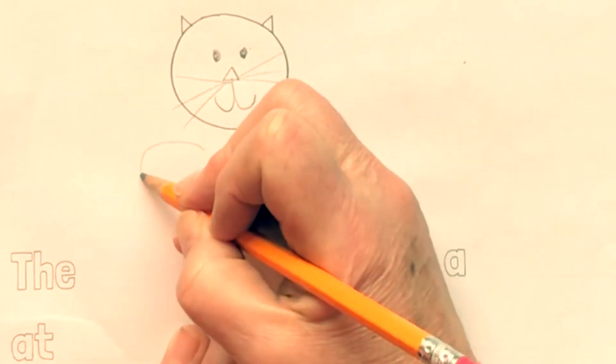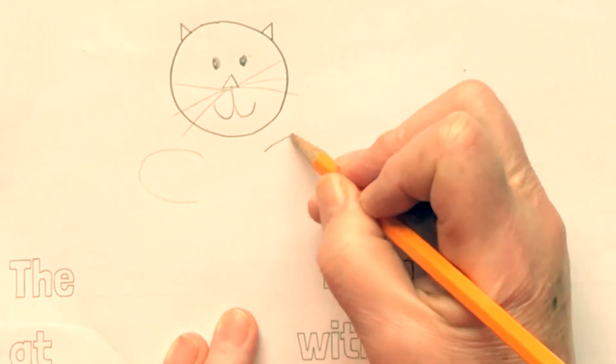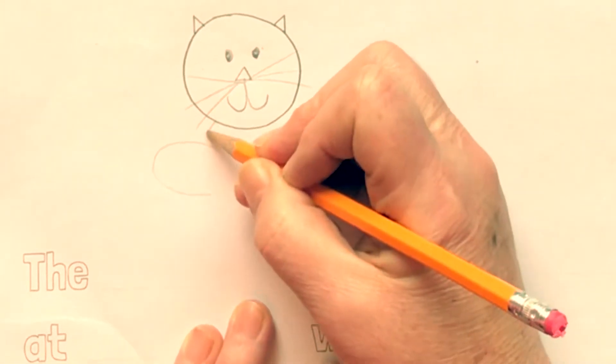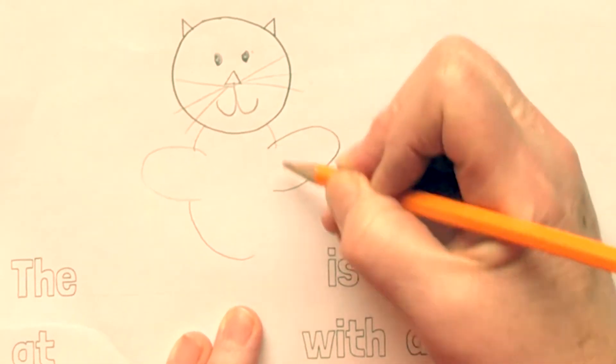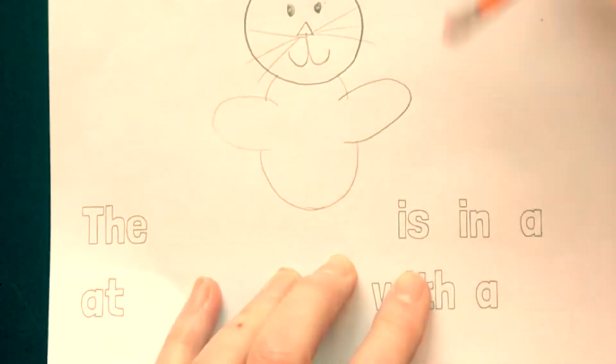And now for this cat, it's going to hold a bat, so make a curve for its arms, and then make its body. And that's all we'll make of the cat's hat.